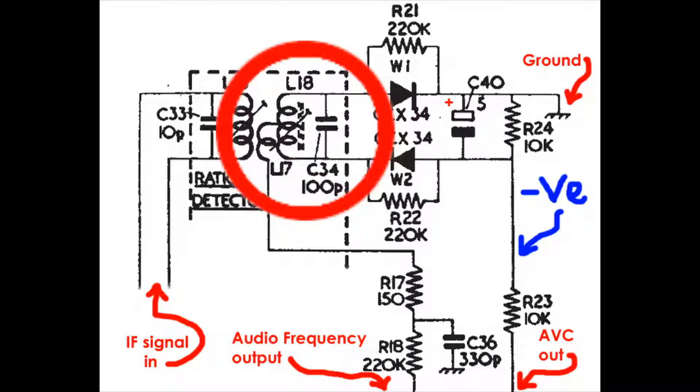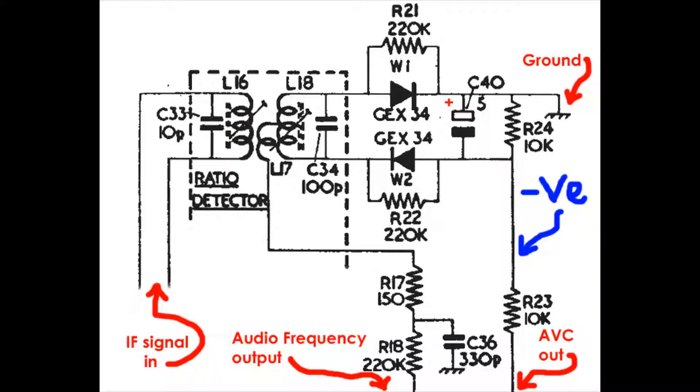The secondary of the transformer, L18, is also part of a tuned circuit with C34. Again, these are tuned to the center frequency of the carrier wave.